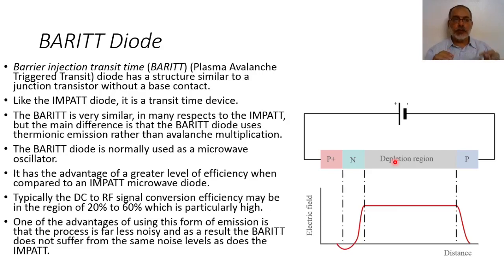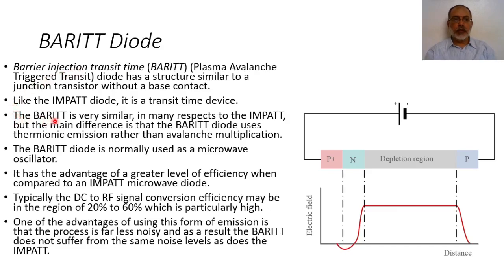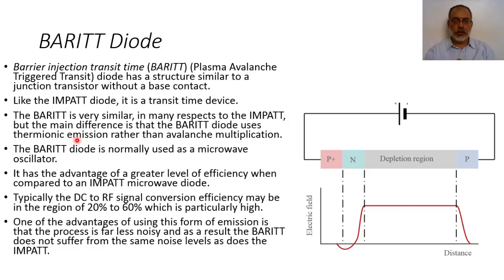The main difference between the Barrier Injection Transit Time diode and the IMPATT diode is that in the BARITT diode there is no avalanche breakdown. The avalanche breakdown is a noisy process, so the main advantage of the BARITT diode compared with the IMPATT diode is that it is less noisy. The BARITT diode uses thermionic emission rather than avalanche multiplication, and as a result, this introduces less noise.